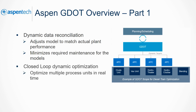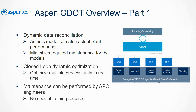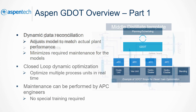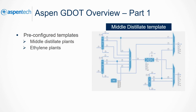GDOT operates as a closed-loop controller, optimizing multiple process units in real time. Also, GDOT can be maintained by APC engineers without additional training. GDOT also has some pre-configured templates to make configuration, deployment, and maintenance of the models easier for common plant types, such as middle distillate plants and ethylene plants.